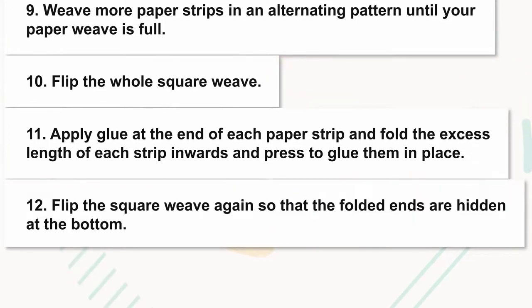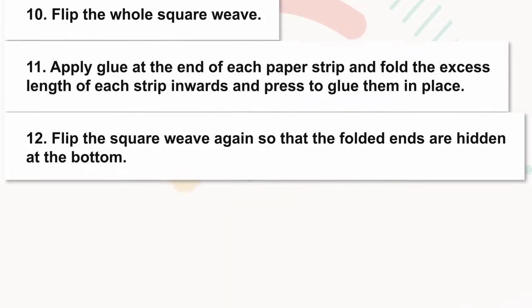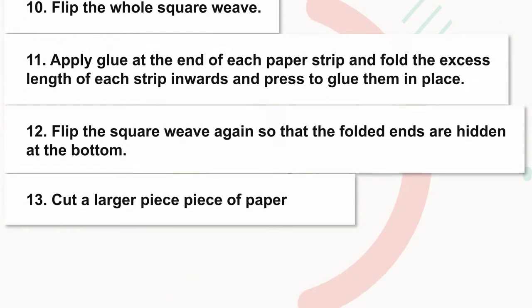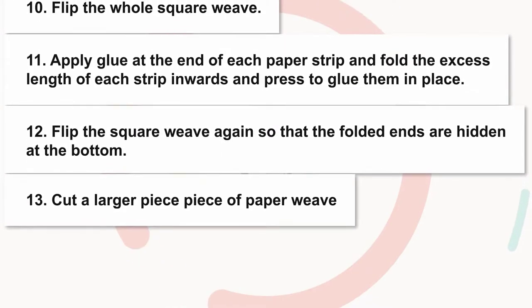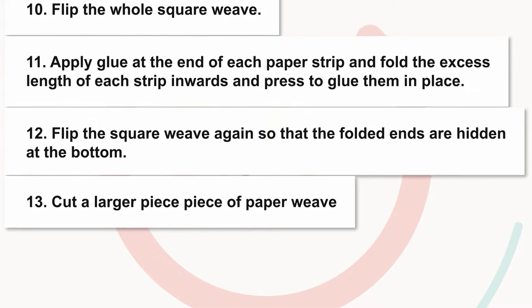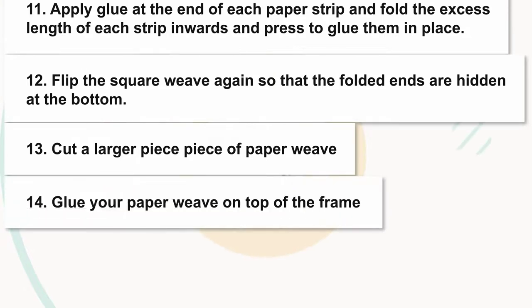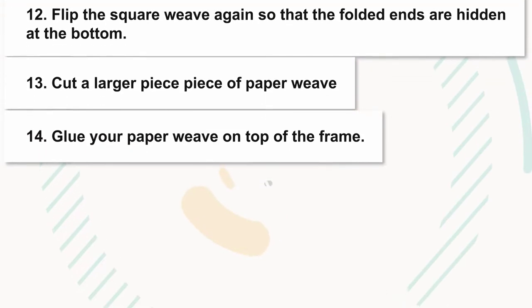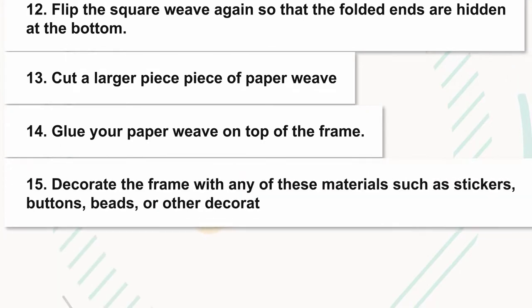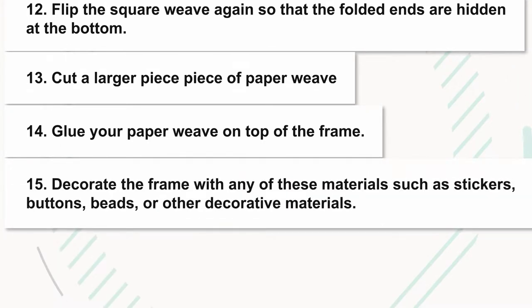Step twelve: flip the square weave again so that the folded ends are hidden at the bottom. Step thirteen: cut a larger piece of paper for the frame. Step fourteen: glue your paper weave on top of the frame.